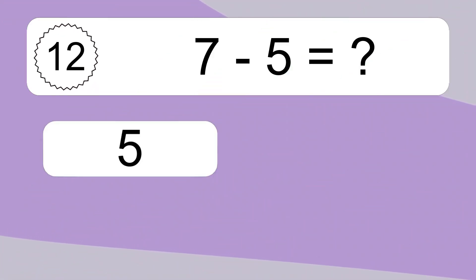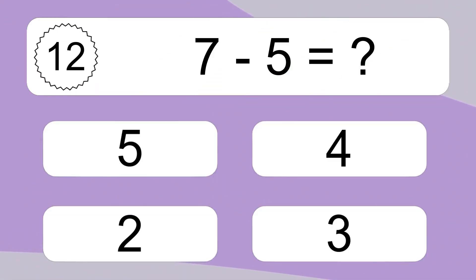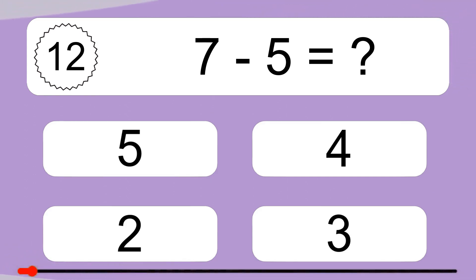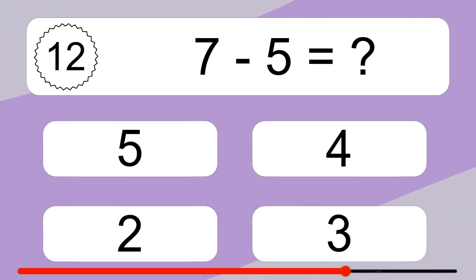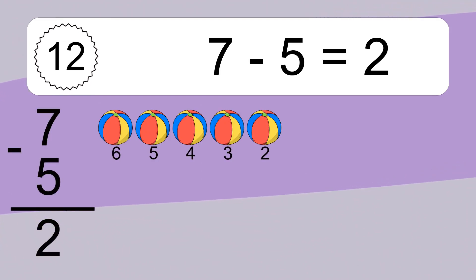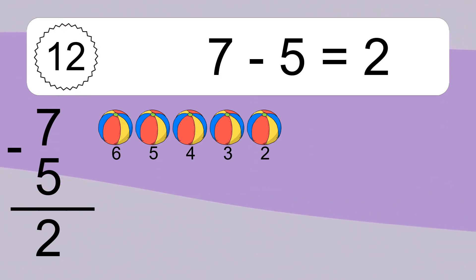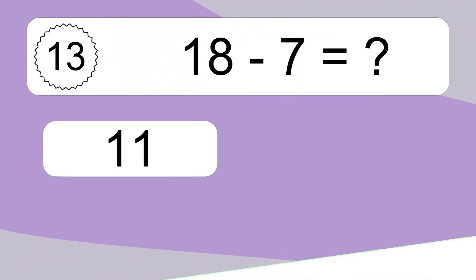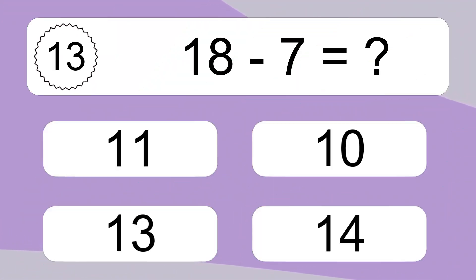7 minus 5 equals what? 7 minus 5 equals 2. Let's count it. 6, 5, 4, 3, 2.